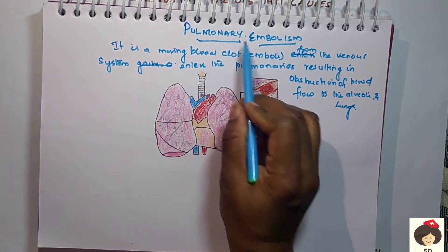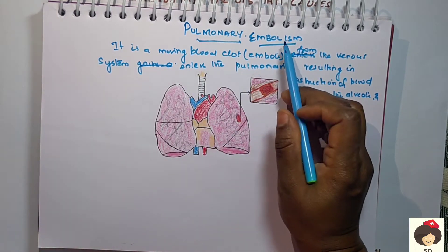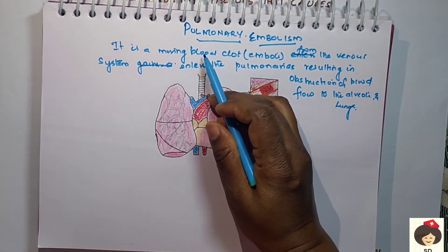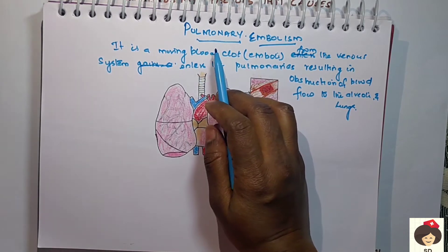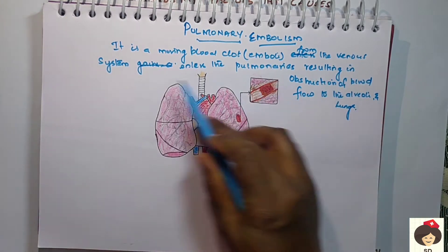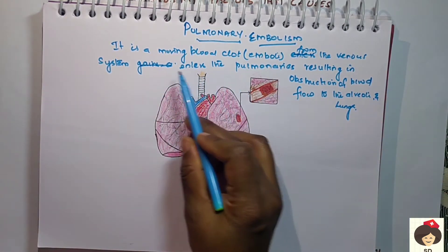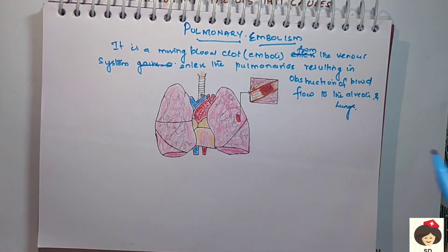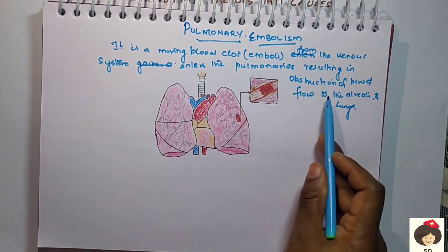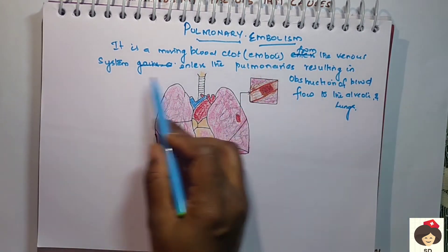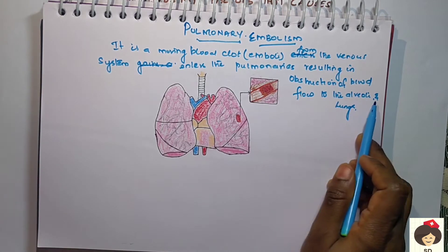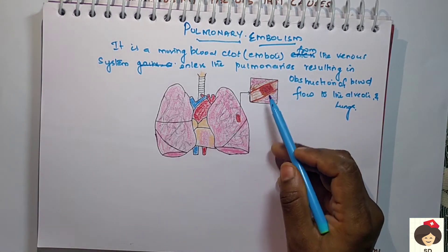Pulmonary pertains to the lungs and embolism is a moving clot. When a moving clot obstructs the pulmonary vessels and thereby there is no blood flow to the lungs, we call it pulmonary embolism. It is a moving blood clot from the venous system — all veins enter the superior or inferior vena cava, drain into the right atrium, and go to the pulmonary artery, causing obstruction of blood flow to the alveoli.